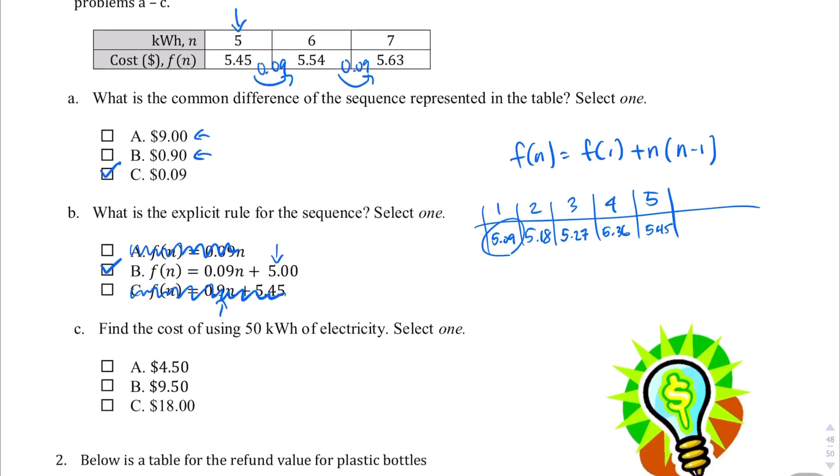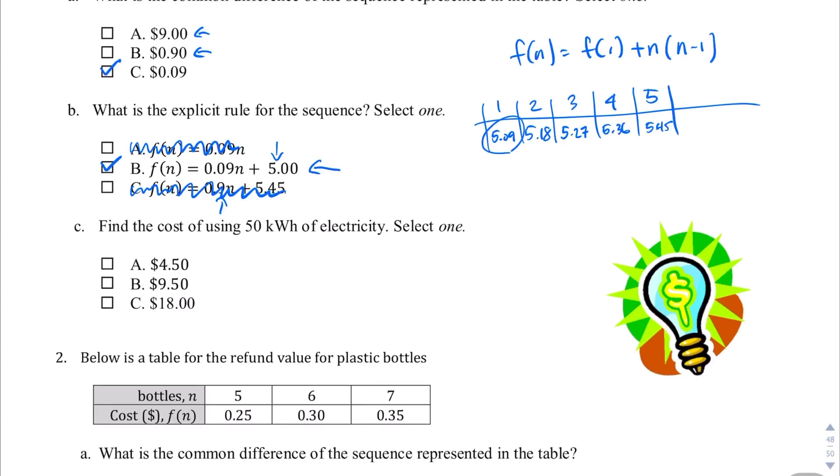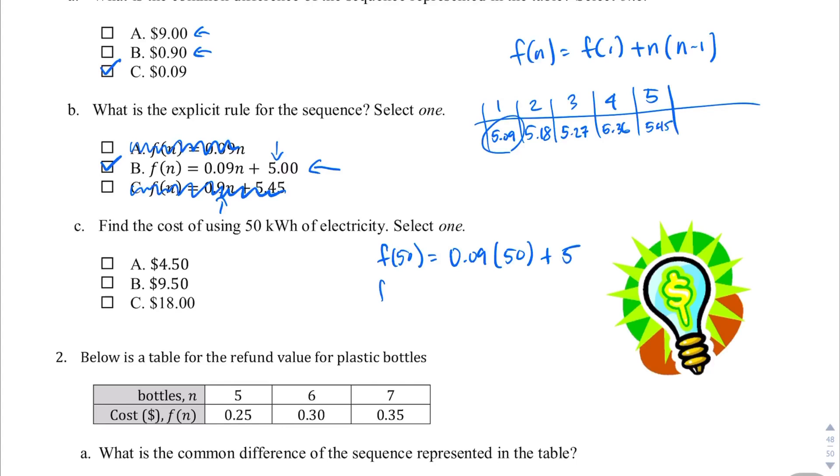Moving on. Choice C. Let's find the cost of using 50 kilowatts of electricity based on our knowledge right here. If we do that, let's continue on with it. f(n) is equal to 0.09 times n, which is, we're trying to find 50. f(50). Let me rewrite this here. This is going to be f(50). Plus 5. The f(50) is going to be 0.09 times 50, which gives us 4.50. And then plus 5. And 4.50 plus 5 ends up being 9.50, which is choice B, right there.